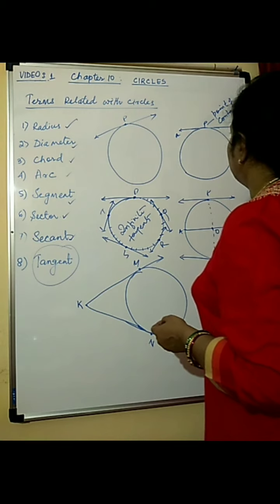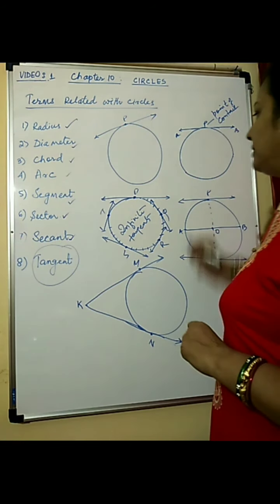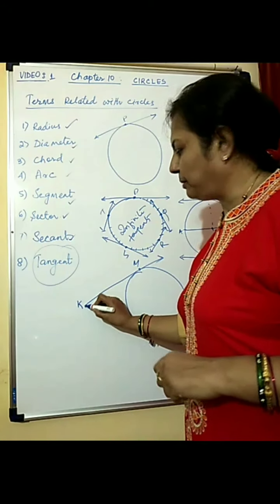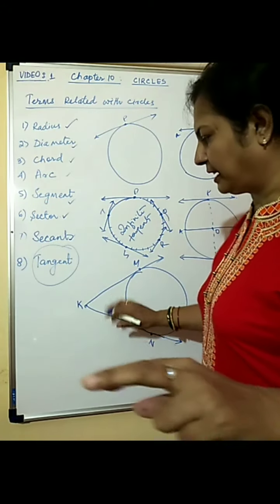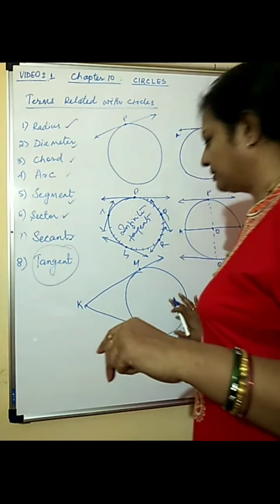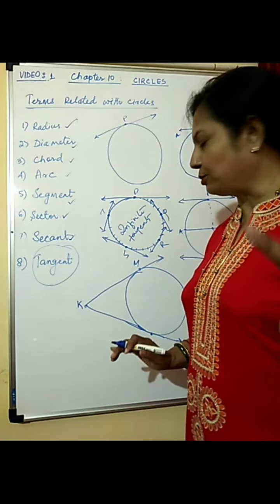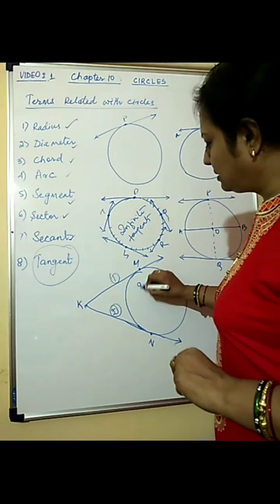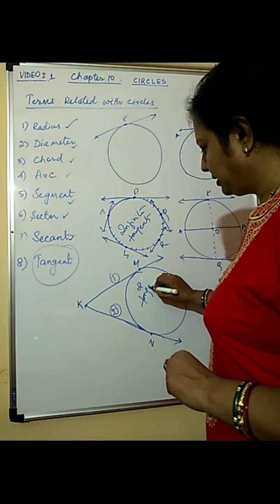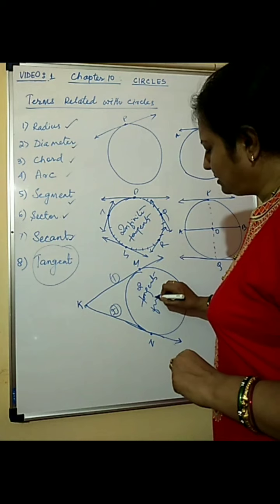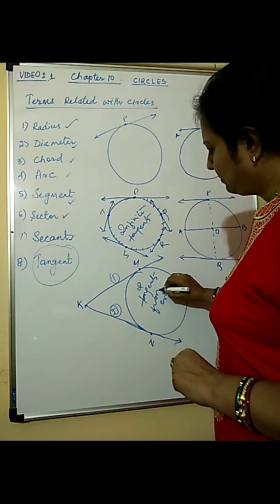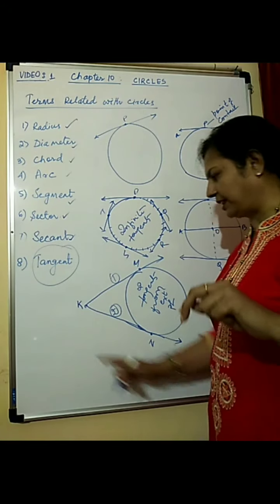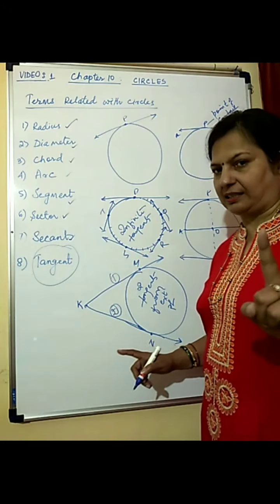From any exterior point — that is a point which lies outside the circle — only two tangents can be drawn. Only two tangents can be drawn to any given circle from one exterior point.